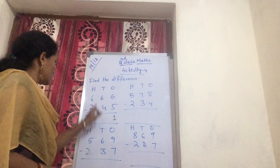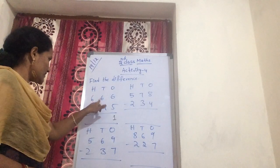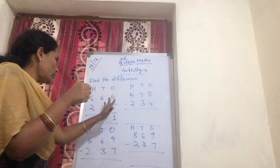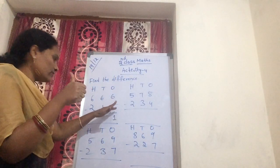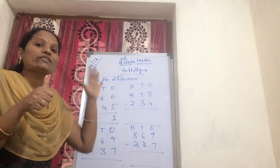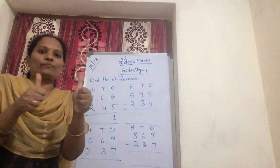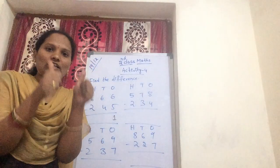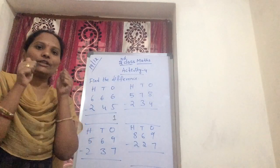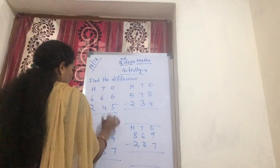Now next one — 6 minus 4. Again show this 6 on your fingers. You are removing 4 fingers: 1, 2, 3, 4. Still here — how many fingers are there? 2 fingers. So what is your answer? 2. Now keeping in tens.